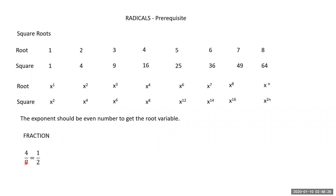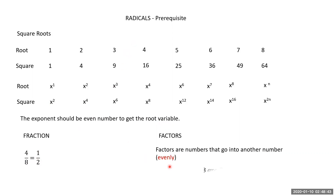Now, fractions: take 4 by 8 — you can find a common factor of 4, so 4 ones are 4 and 4 twos are 8, giving the simplified fraction 1 by 2. In the same way, we can also simplify radical expressions.